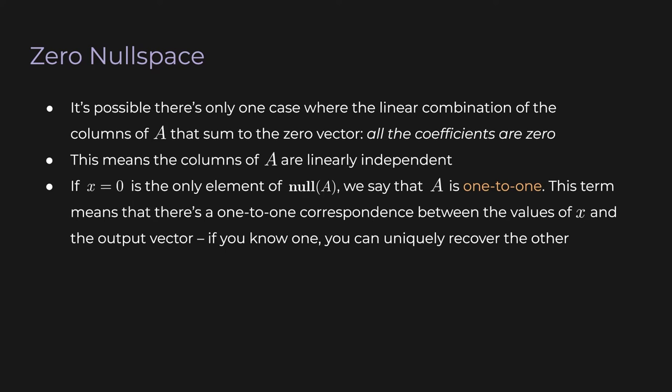When zero is the only element of the null space, we say that A is one-to-one. This term means there's a one-to-one correspondence between the input vectors and output vectors — there's no ambiguity. Each unique input vector gets mapped to a unique output vector; if you know one, you can uniquely recover the other.